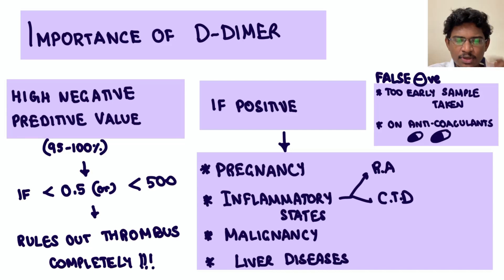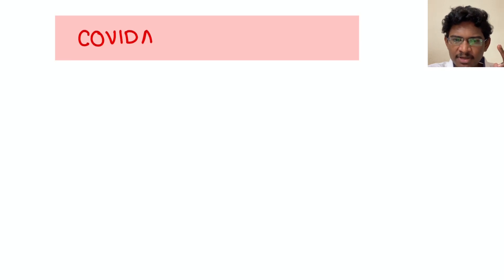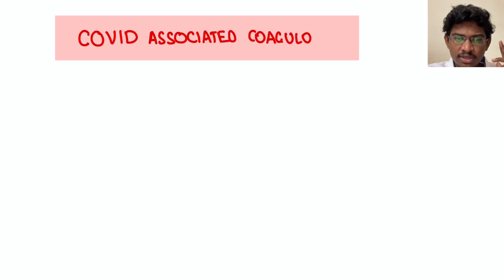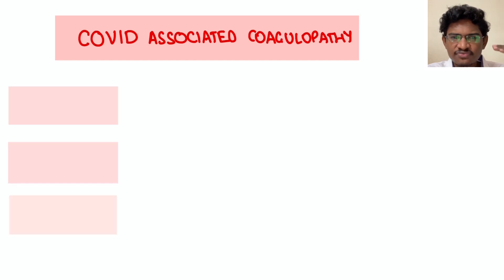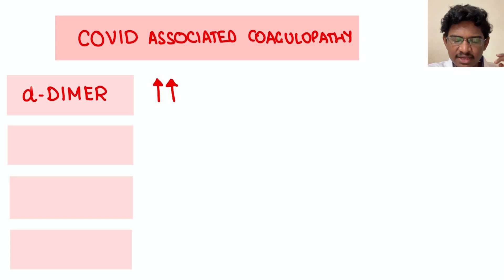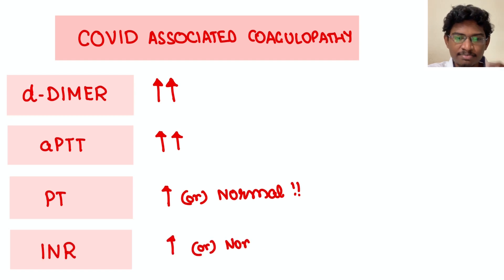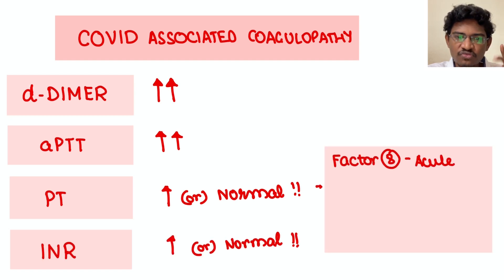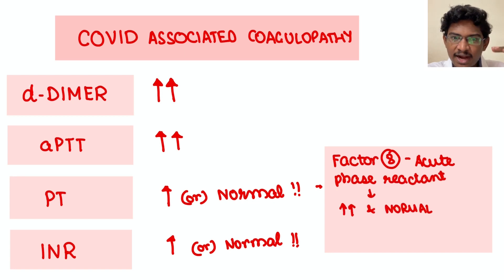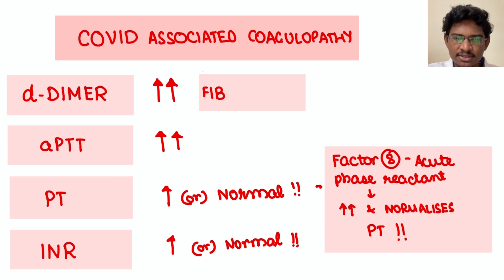COVID-associated coagulopathy is the term for COVID's tendency to form clots here and there. D-dimer is elevated, and APTT is increased since all coagulation factors are utilized in clot formation. PT may be increased or normal — because factor 8 is an acute phase reactant that increases and might normalize the PT, and therefore INR may also normalize. So you can be falsely misled by PT-INR values. It is always best to use APTT and D-dimer values.